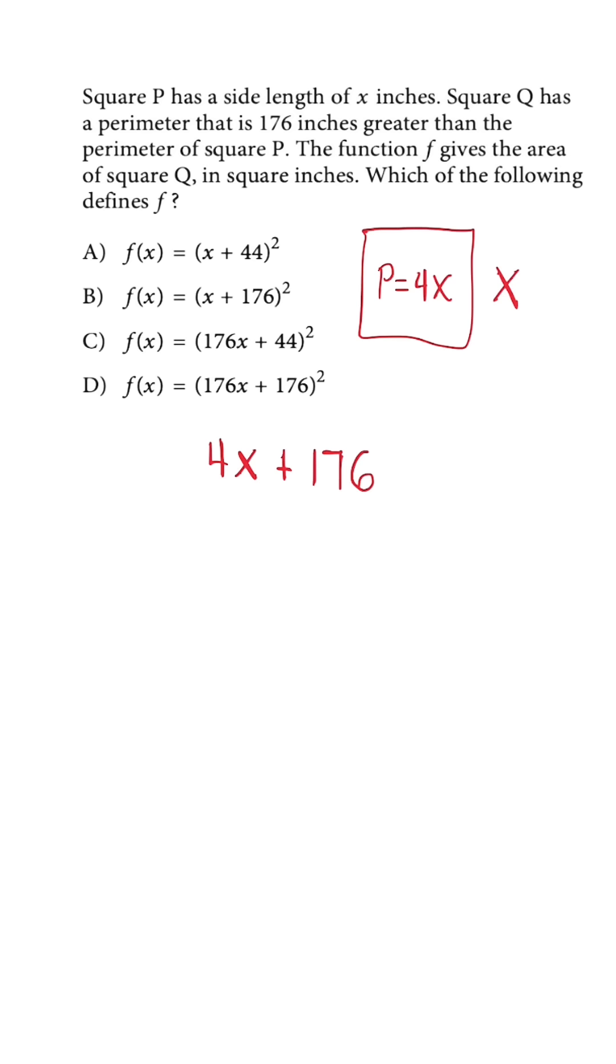Remember that with this question, we're trying to determine the length of one side. This right here expresses the perimeter. If we want to figure out the side length for one side, there are four sides, so that means we'd have to take our perimeter and divide it by four.